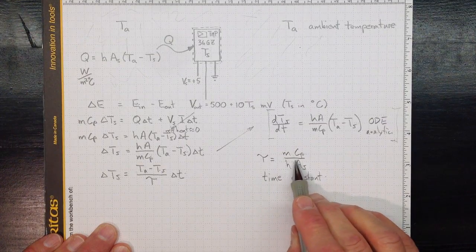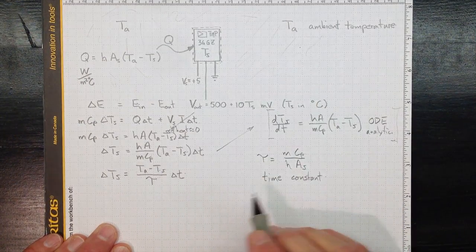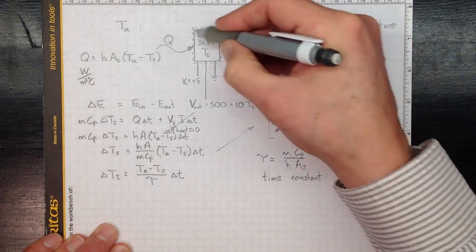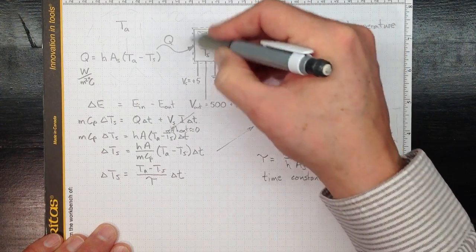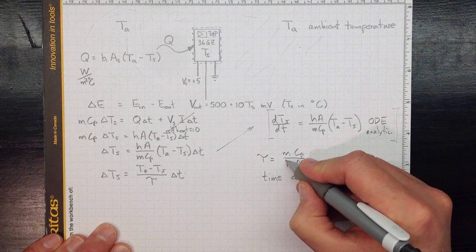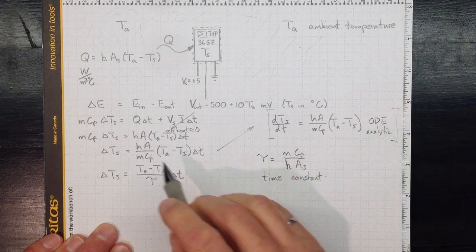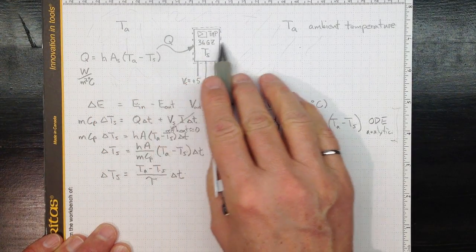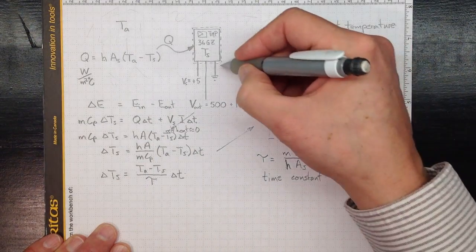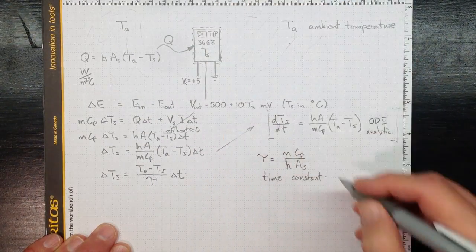This time constant tau has things that are all about the nature of the sensor. How big is it? What's its mass? What's its specific heat? What's it made out of? And how much energy does it take to warm that kind of stuff up? This H, this heat transfer coefficient, which is all about what the surroundings look like and how the heat transfer takes place, and the overall size of the sensor.